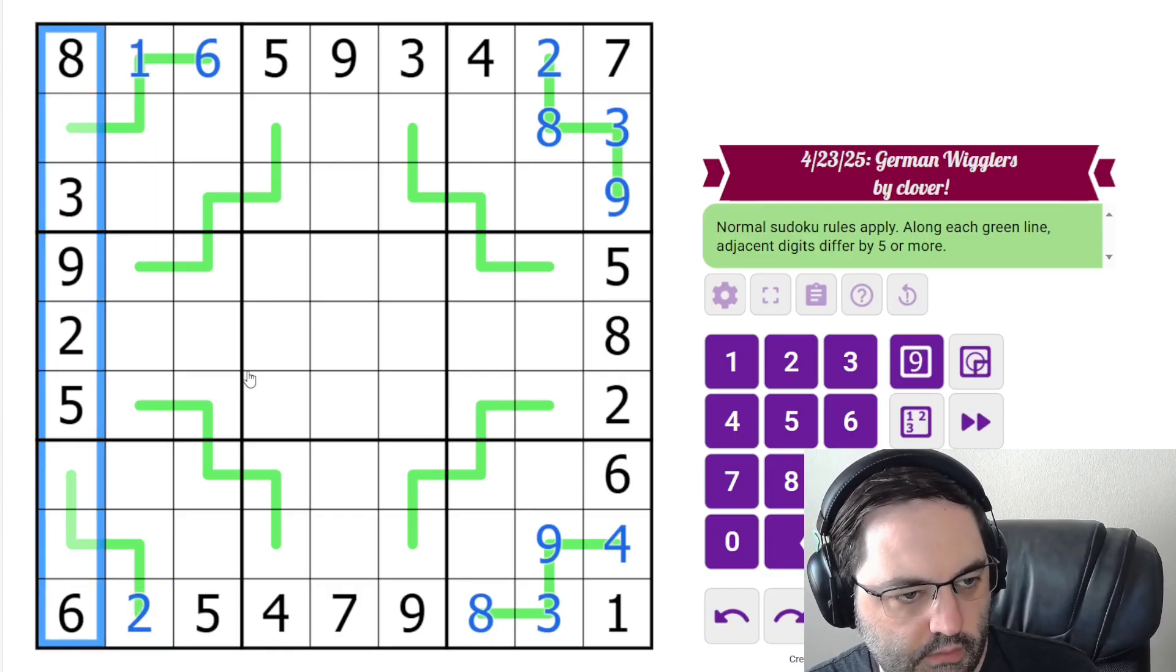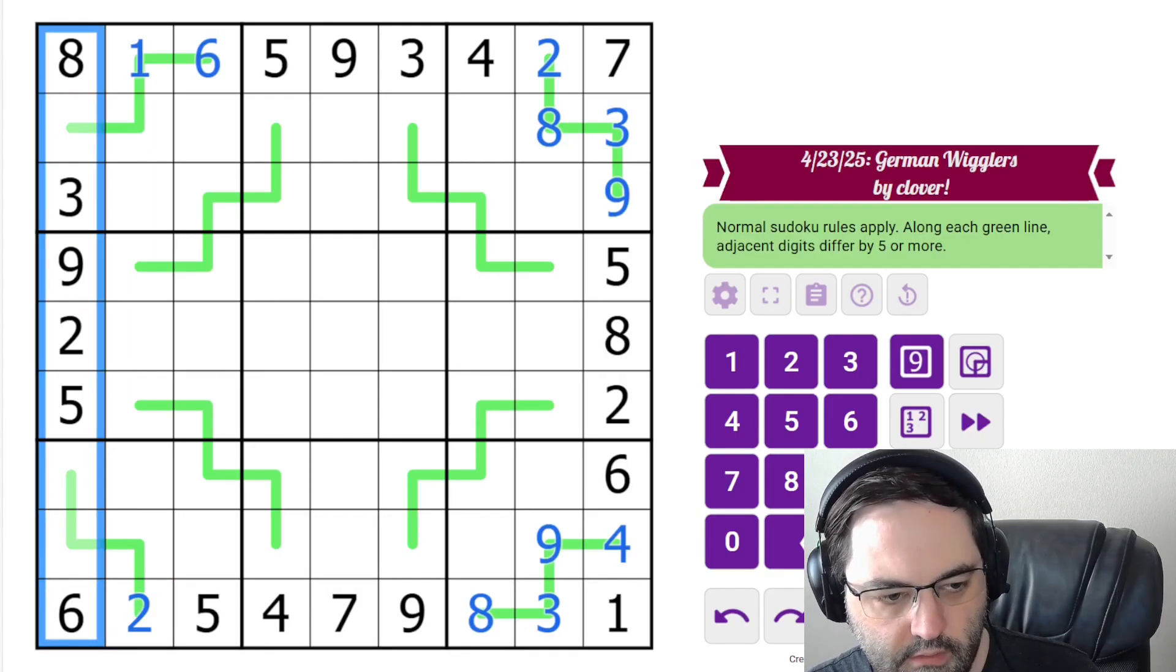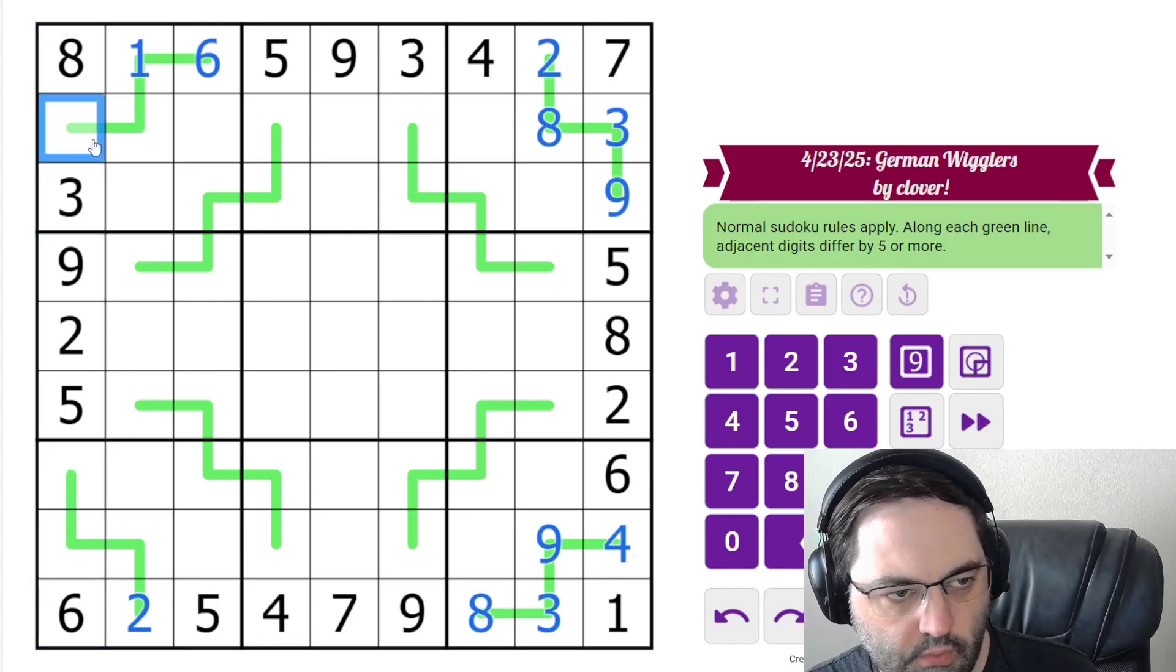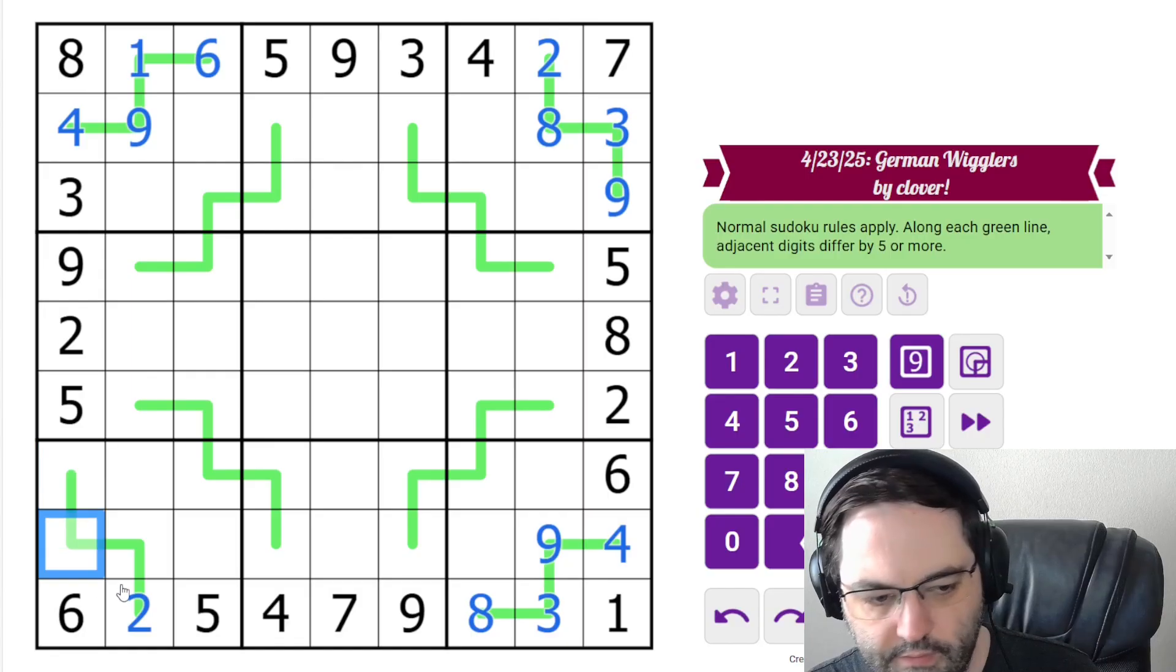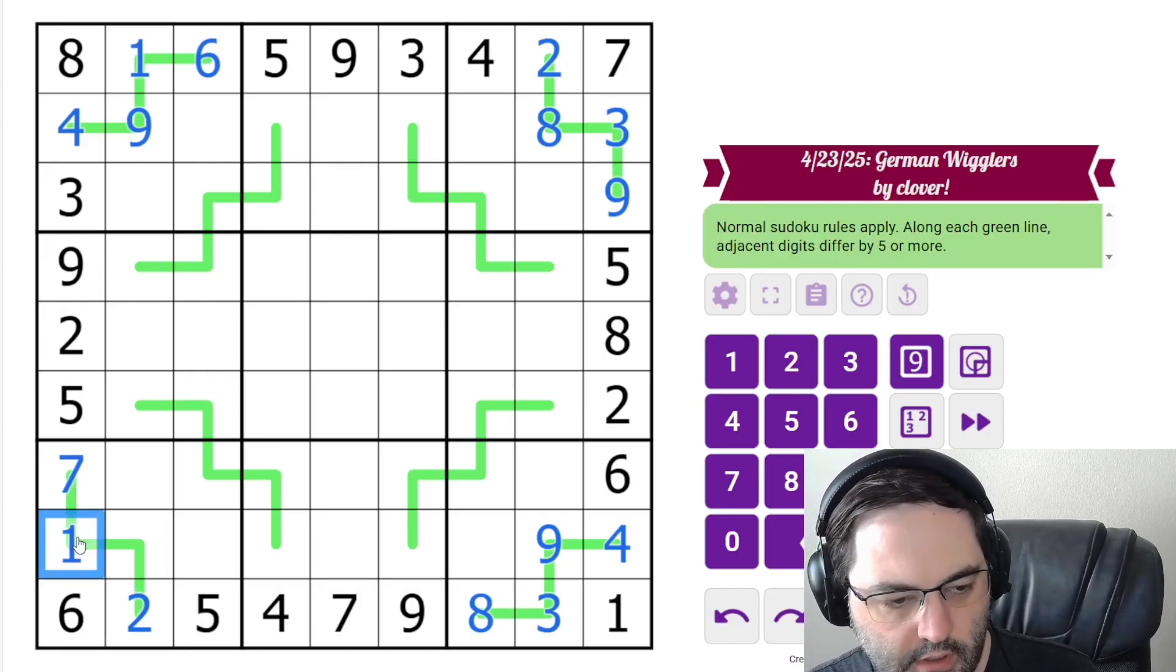This column needs 1, 4, and 7. The 4 can't go next to 1 or 7, so it goes here. It needs a 9. And then these are 1, 7, and we know the order because of the 2 there.